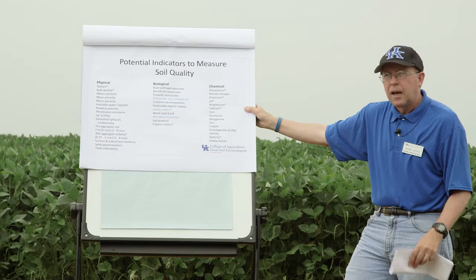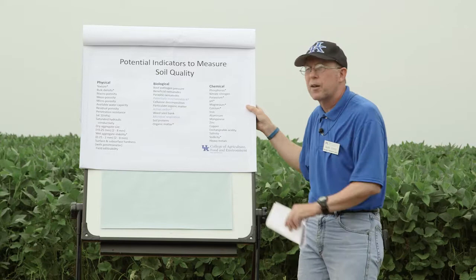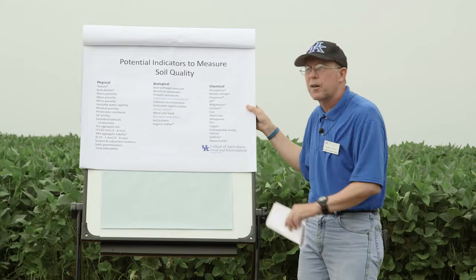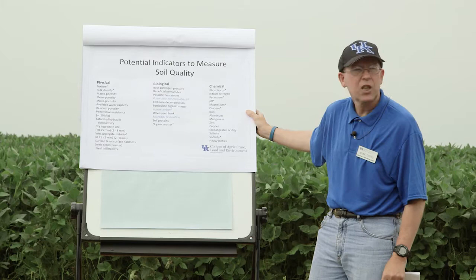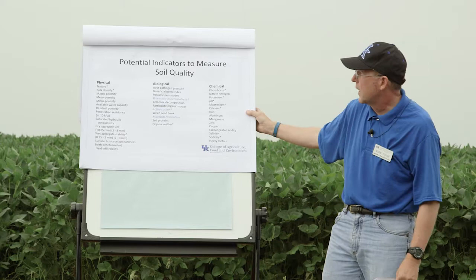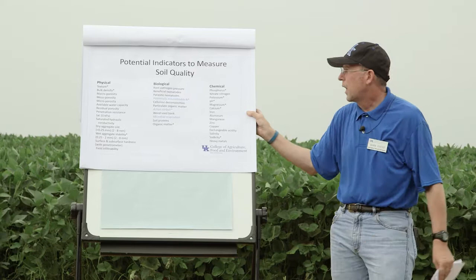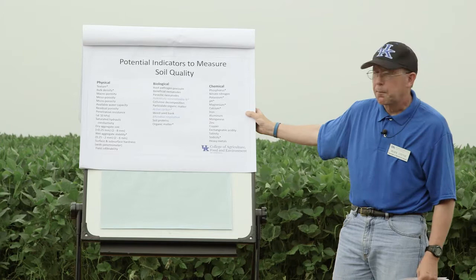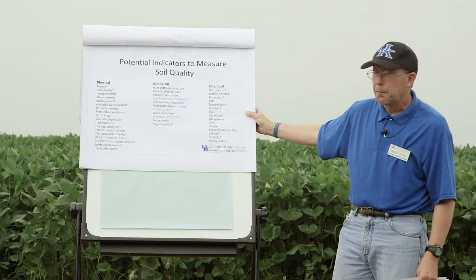I talked about what soil quality is. I talked about why you should care about it. Now I want to say, how do you measure it? Because if you can measure it, you can change it. And there are a whole bunch of different types of things that you can measure in terms of physical, biological and chemical properties that are linked to soil health. Physical properties like texture or bulk density or the dry aggregate size. Biological properties like beneficial or parasitic nematode numbers or particulate organic matter. The three that I like are potentially mineralizable N, active carbon and microbial respiration.